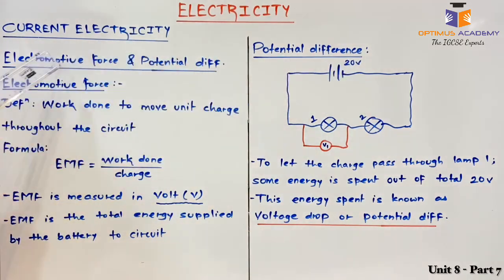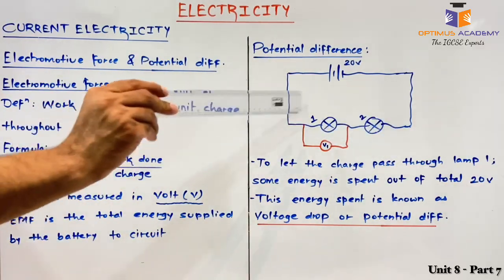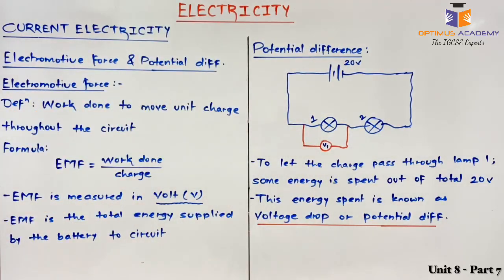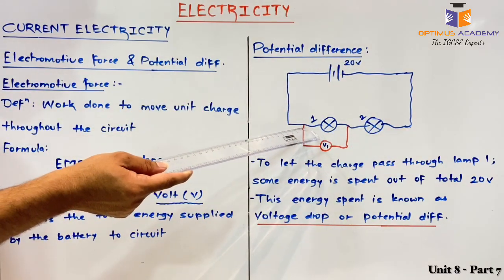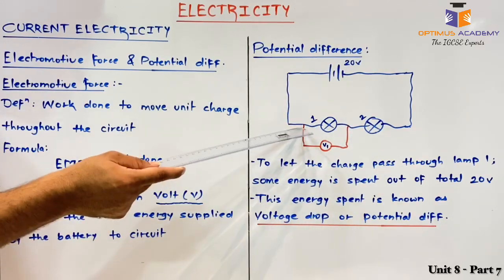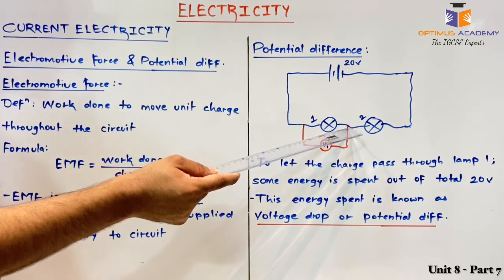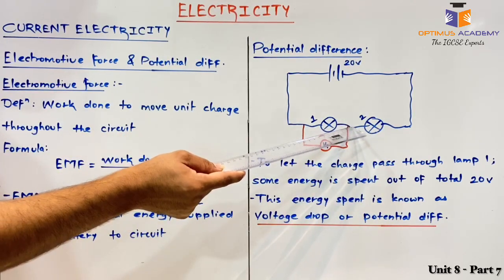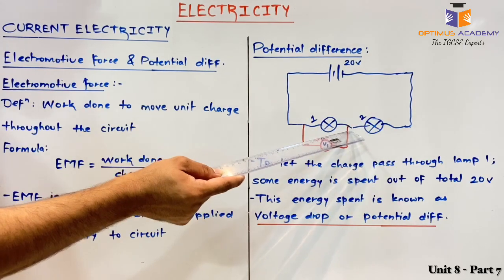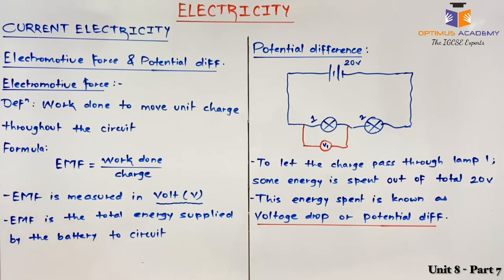So the total energy provided by the battery is electromotive force, that is 20 volt. The energy spent at different points out of this 20 volt is known as potential difference. For example, out of 20 volt, 10 volt is spent across lamp 1. So the energy was 20 volt before lamp 1, but when it reaches after lamp 1, its value decreases by 10, and it carries only 10 units of energy. That 10 units will then be utilized by lamp 2. I hope you are now clear with what is electromotive force, what is potential difference, and electric current. Thank you.